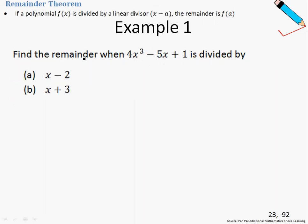So in Example 1, find the remainder when 4x³ - 5x + 1 is divided by (x - 2) as well as (x + 3). The first thing I want to do is let f(x) be the given polynomial.